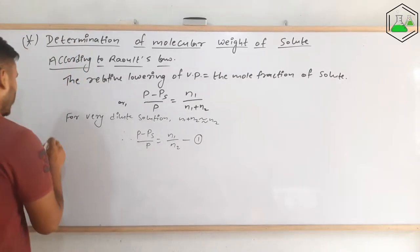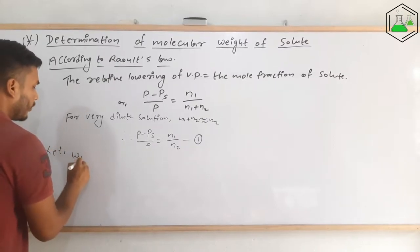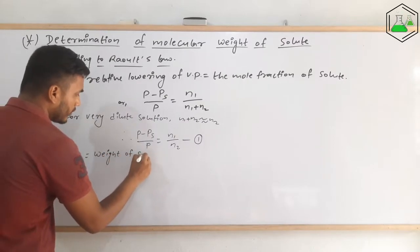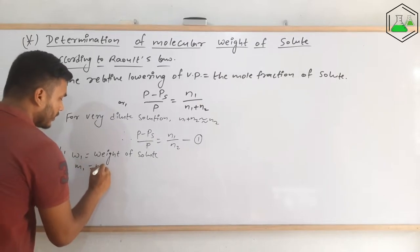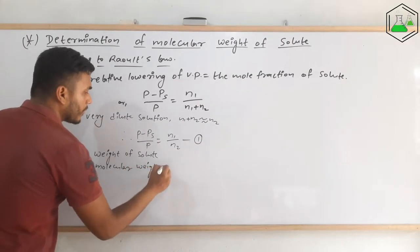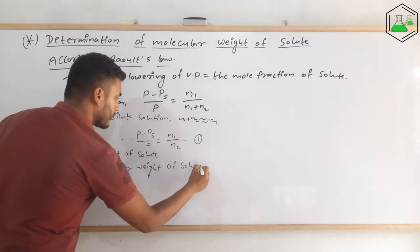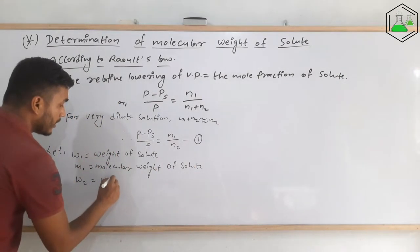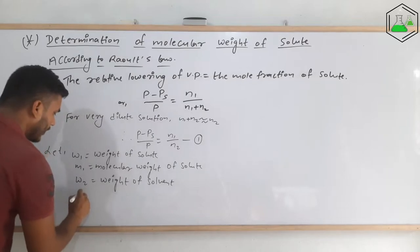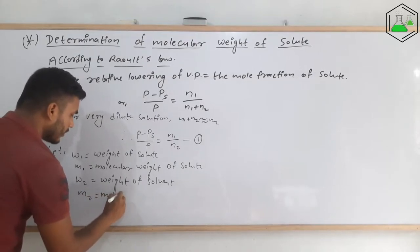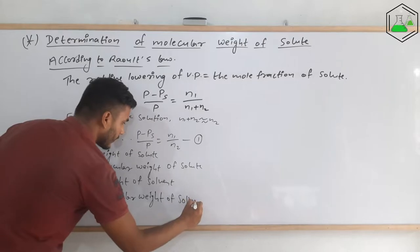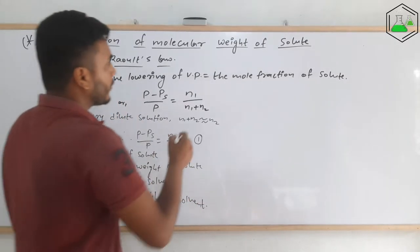Now we need to consider some more terms. Let w1 be the weight of solute — this is the provided weight of solute. m1 is the molecular weight or molecular mass of the solute. Similarly, w2 is the given or provided weight of solvent, and m2 is the molecular weight or molecular mass of the solvent. So these are the four terms we are considering.